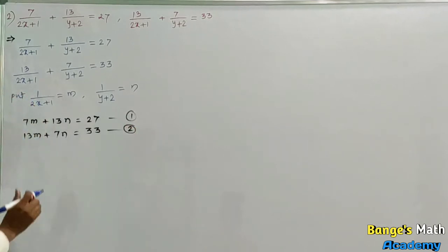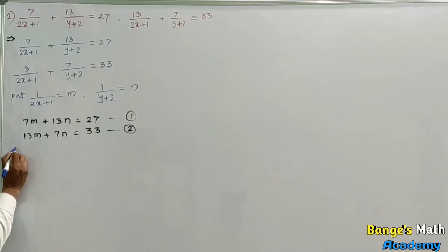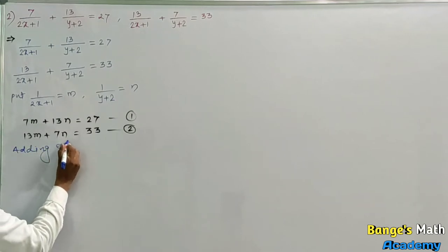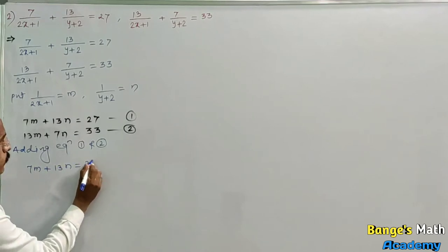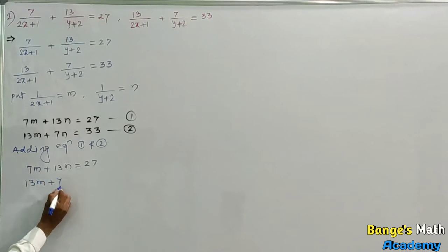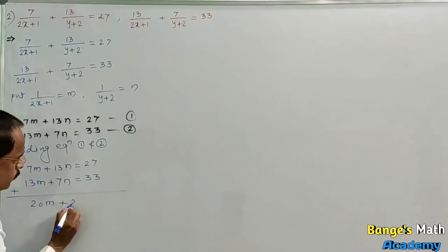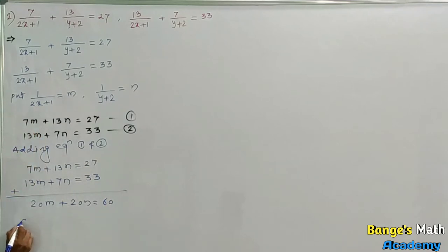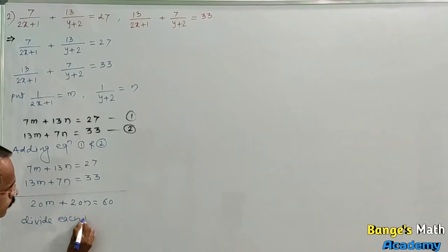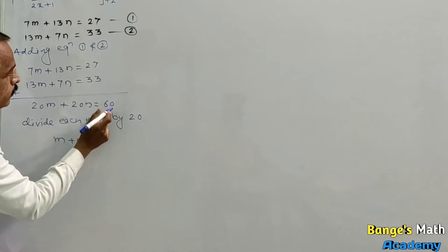The coefficients of m and n are interchanged in the second equation. So by adding and subtracting: adding equation 1 and 2, 7m plus 13m gives 20m, and 13n plus 7n gives 20n, equal to 27 plus 33 equals 60. Dividing each term by 20, we get m plus n equal to 3, equation 3.